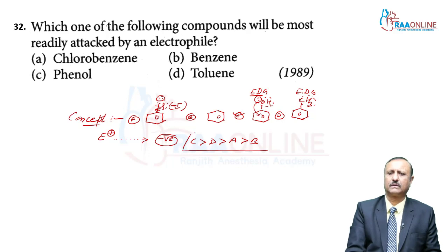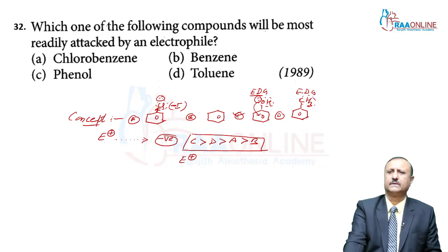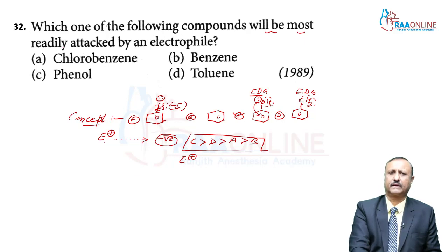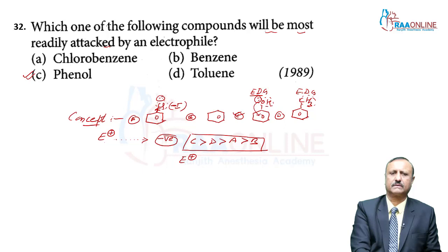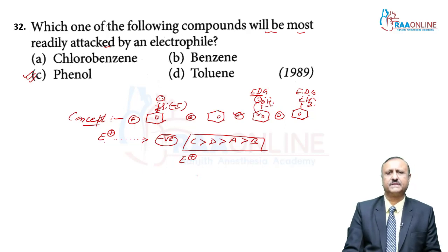The compound most readily attacked by electrophiles is phenol (option C), because the OH group is the strongest electron-donating group, maximally activating the benzene ring toward electrophilic attack.